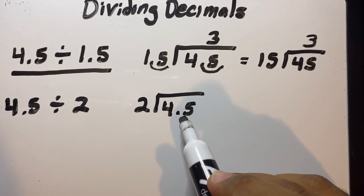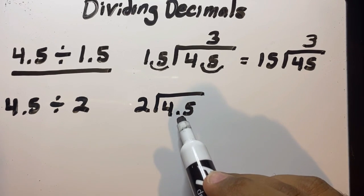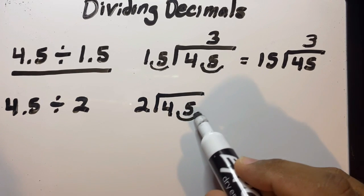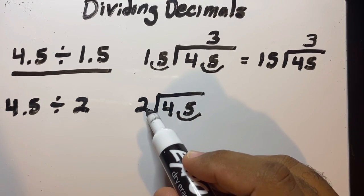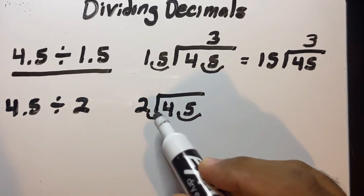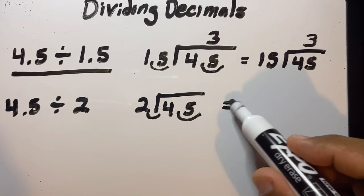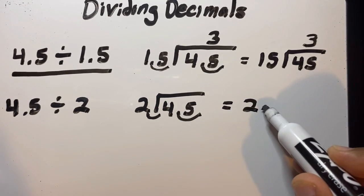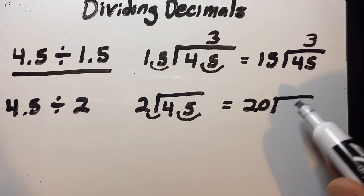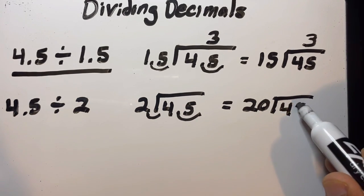However many times I need to move this decimal point to make it a whole number is however many times I have to move the imaginary decimal point that's here. So now this will be 20 on the outside and then 45 on the inside.